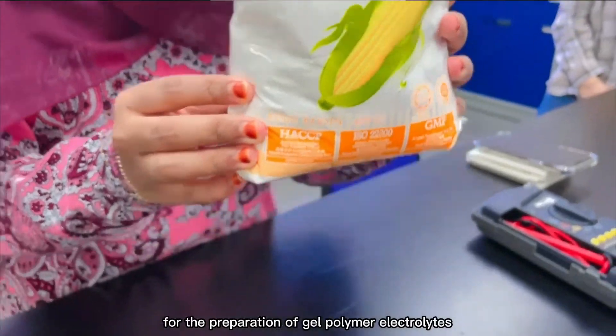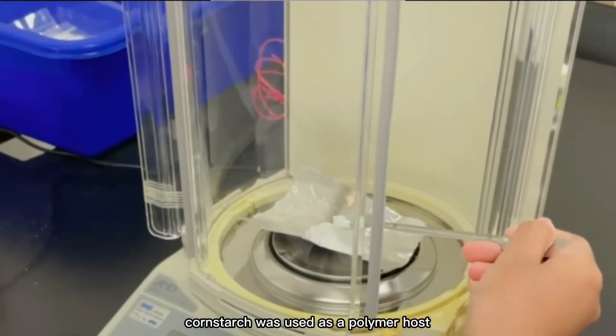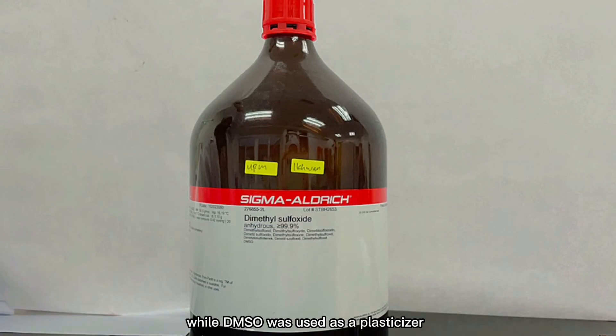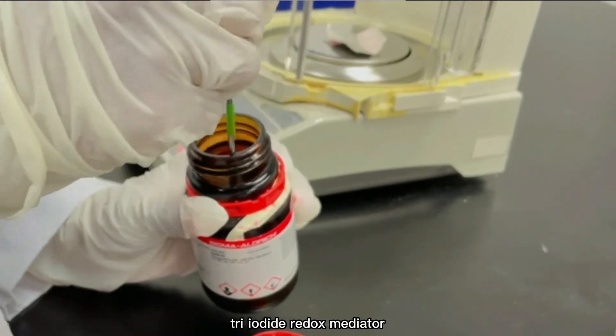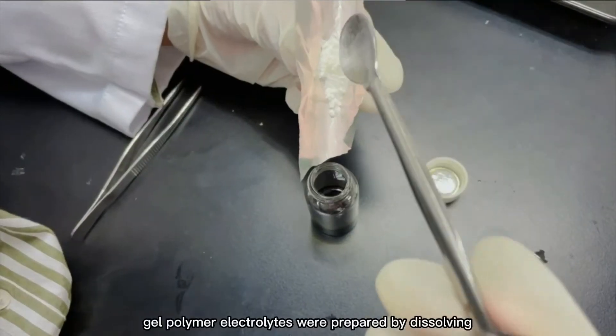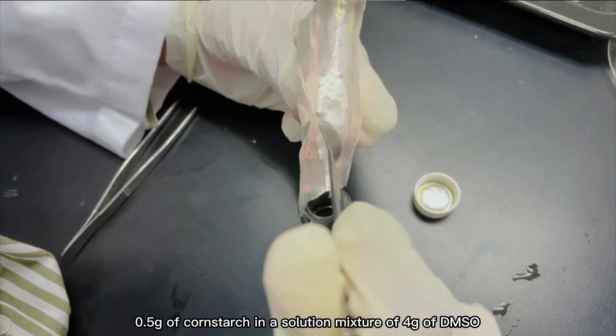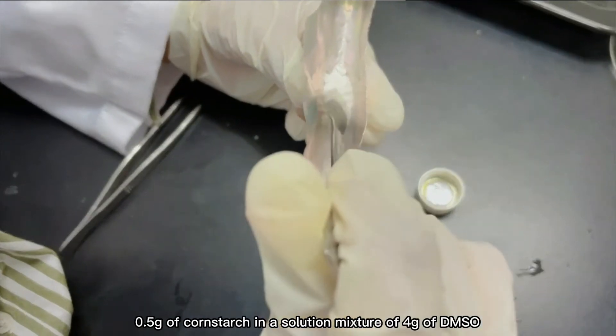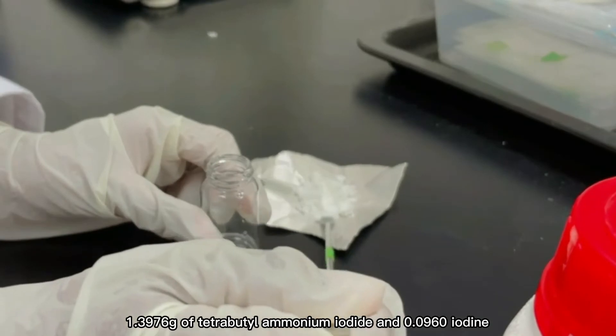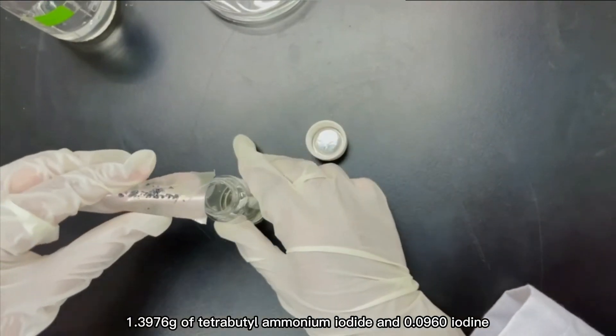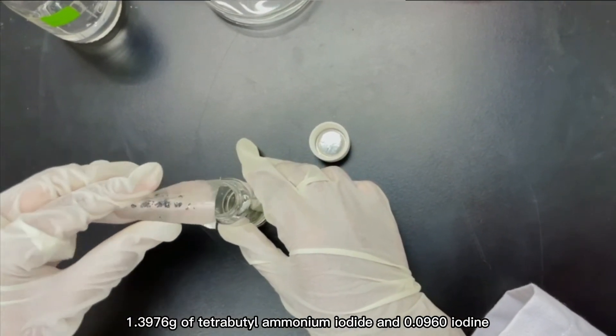For the preparation of gel polymer electrolytes, cornstarch was used as a polymer host while DMSO was used as a plasticizer. Tetrabutyl ammonium iodide and iodine were used to form iodide triiodide redox mediator. Gel polymer electrolytes were prepared by dissolving 0.5 grams of cornstarch in a solution mixture of 4 grams of DMSO, 1.3976 grams of tetrabutyl ammonium iodide and 0.0960 grams of iodine.